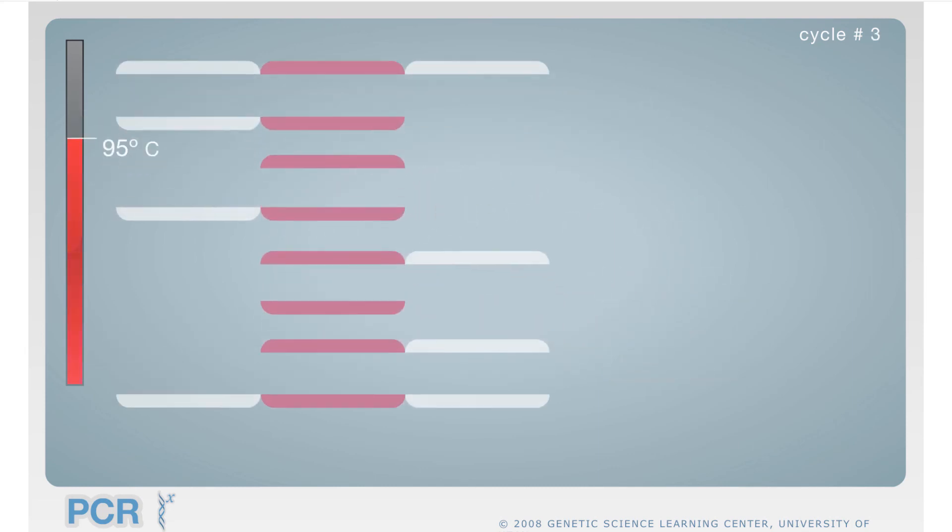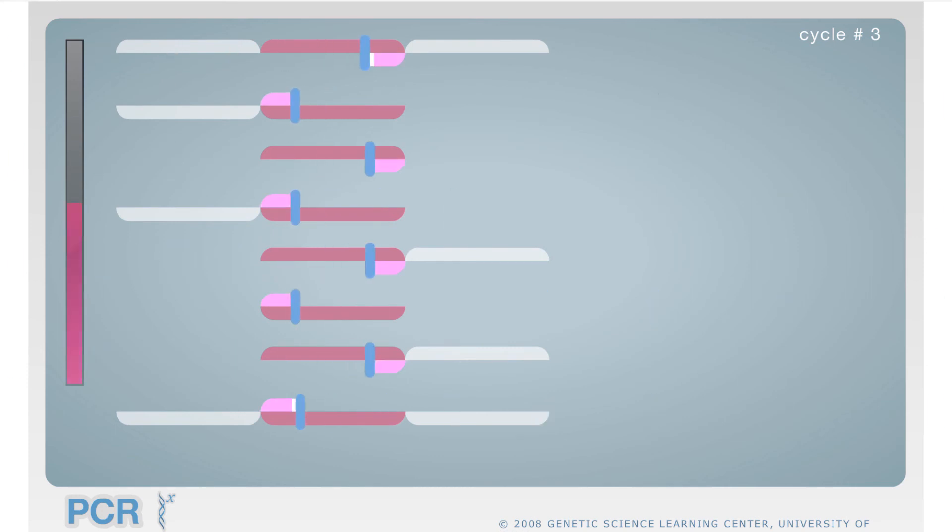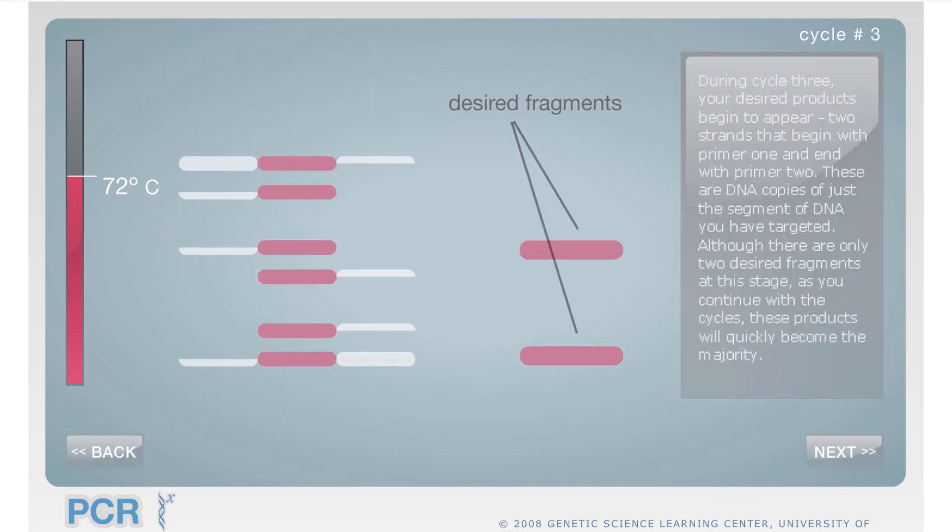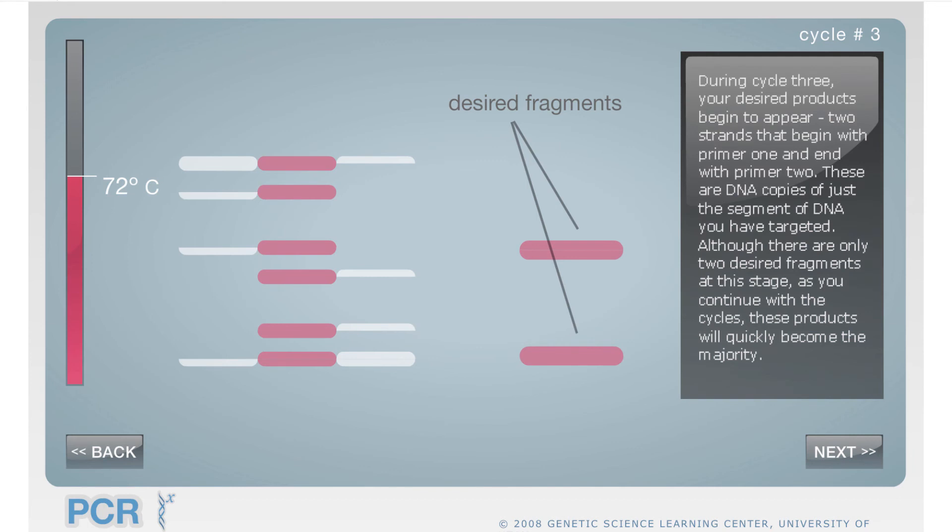An entrepreneur once told me that if you can double your 1 peso every next day, you'll be a millionaire after 20 days and a billionaire after 25 days. So I think the same double every cycle principle is shown here.